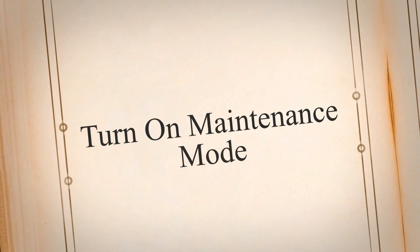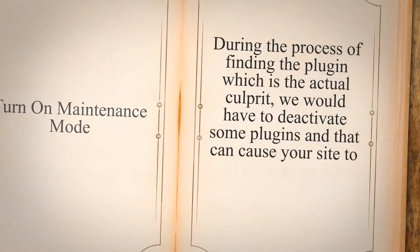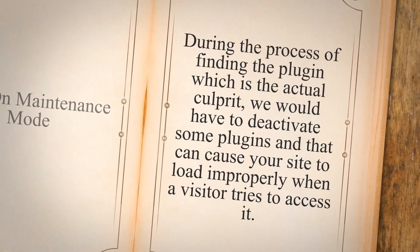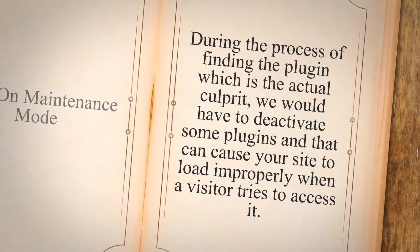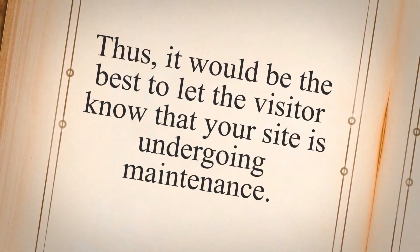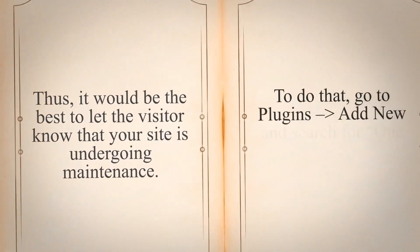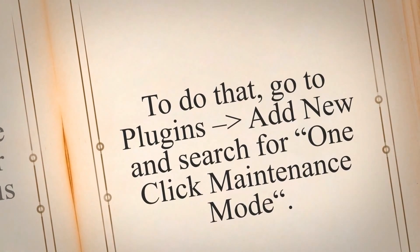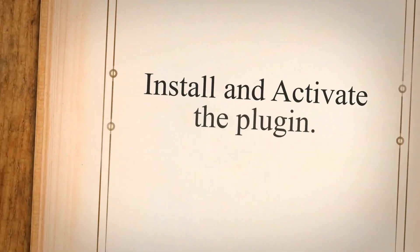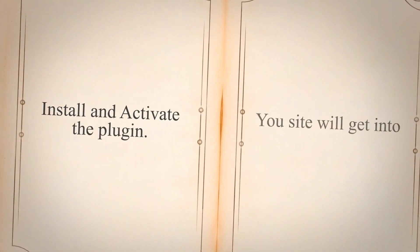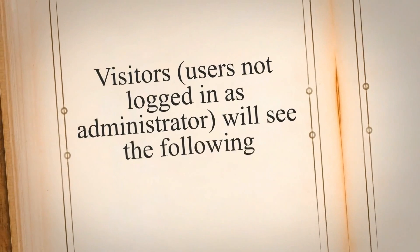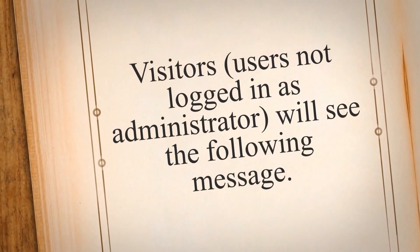Turn on maintenance mode. During the process of finding the culprit plugin, we will have to deactivate some plugins, which can cause your site to load improperly when a visitor tries to access it. Thus, it would be best to let visitors know your site is undergoing maintenance. To do that, go to Plugins > Add New and search for One-Click Maintenance Mode. Install and activate the plugin — your site will enter maintenance mode, and visitors (users not logged in as administrator) will see a maintenance message.